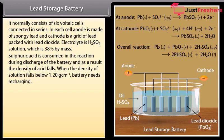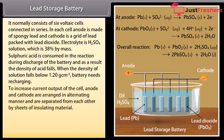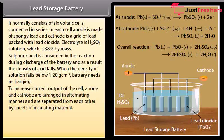When electrical energy is supplied to the battery from an external DC source, cell operates like an electrolytic cell and chemical reactions take place. But now the electrode reactions are reverse from those that occur during the discharge of the battery. To increase current output of the cell, anode and cathode are arranged in alternating manner and separated from each other by sheets of insulating material.